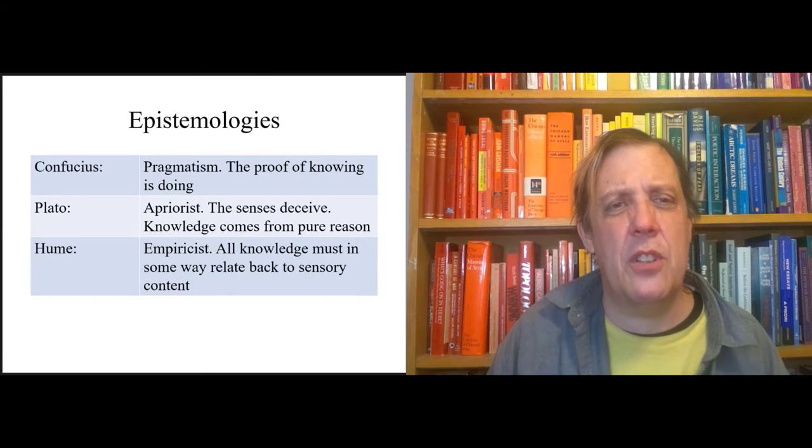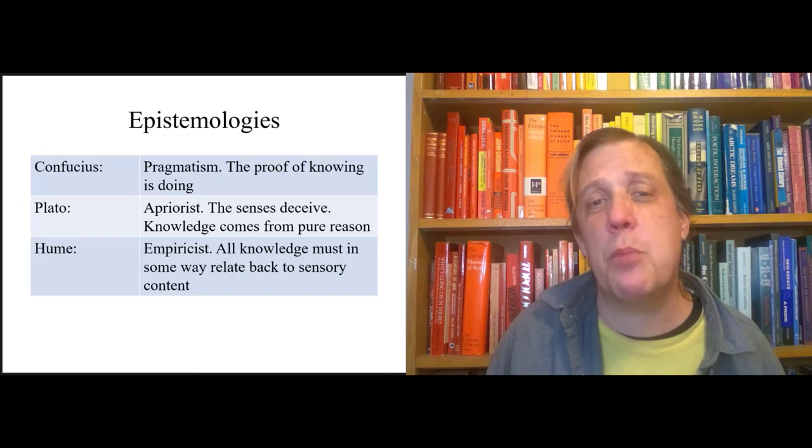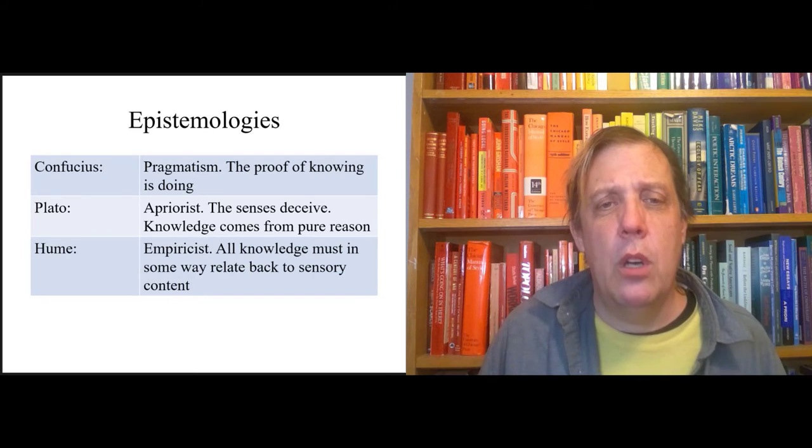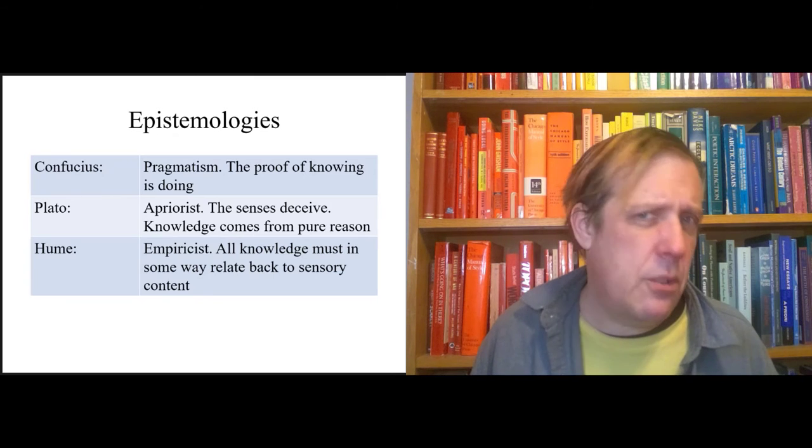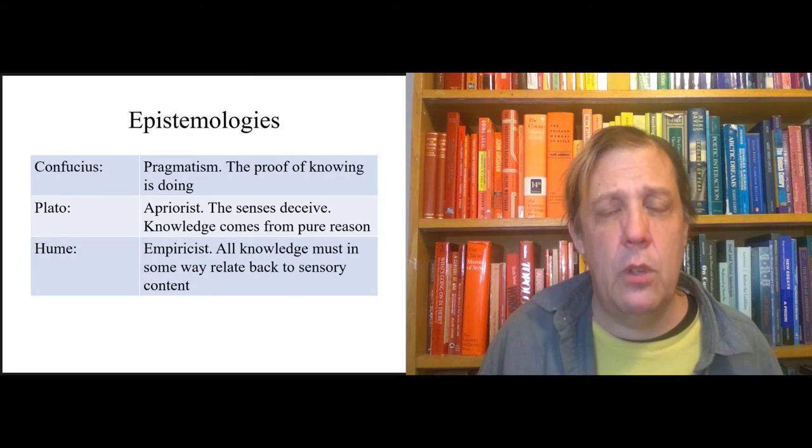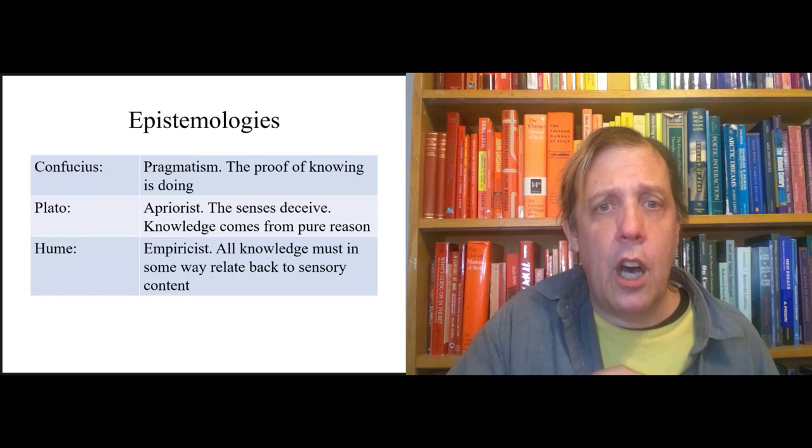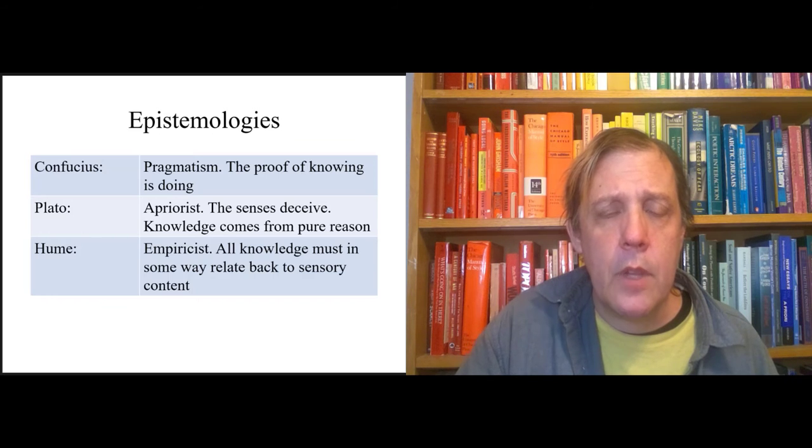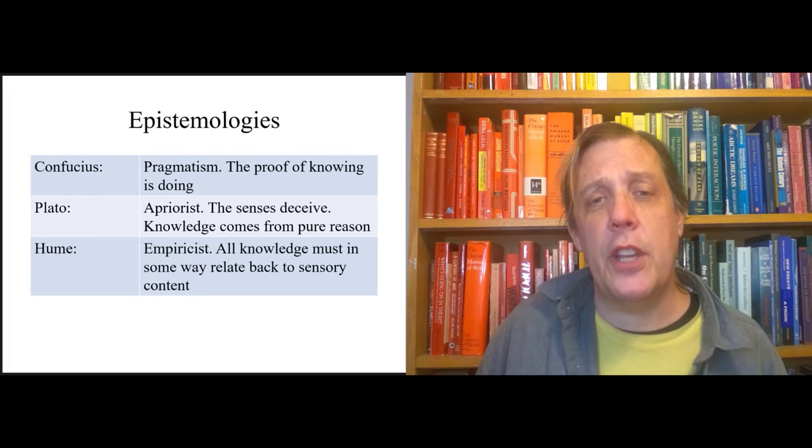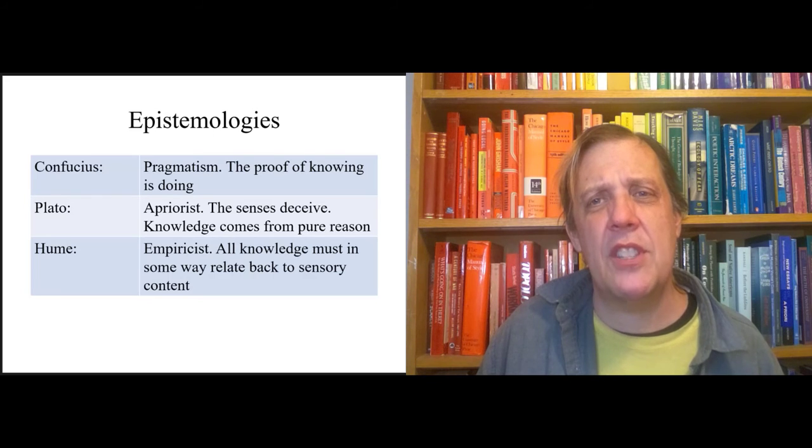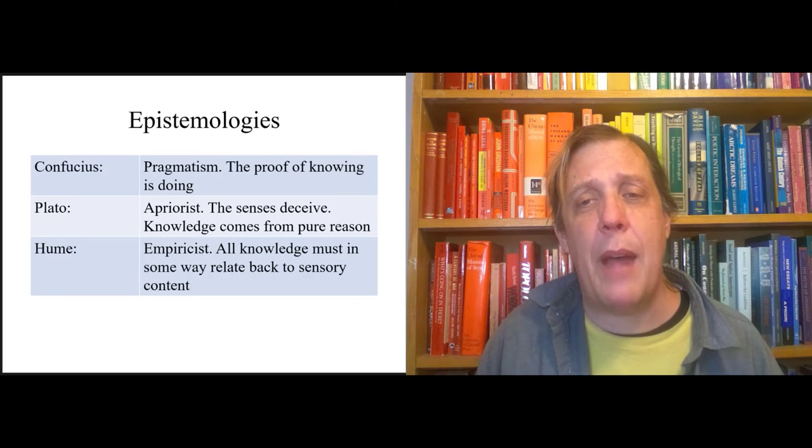We can also think about this in terms of a three-way contrast. You read Confucius, for Confucius knowing is doing and I'm going to label this pragmatism. For Plato, knowing is a priori, your senses deceive you, and so knowledge actually comes from within, not from outside but from within, from pure rationality. Later in the course we're going to get to David Hume and Hume establishes what is now I feel like a lot of common sense in US culture, empiricism, that all knowledge must in some way relate back to sensory content.